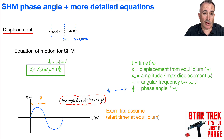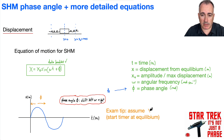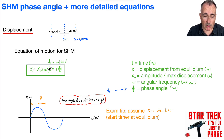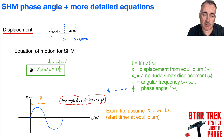We're taking the whole graph and moving it. We're going to assume that when t equals zero, x equals zero — so x equals zero when t equals zero. If you put t equals zero into the equation, sine of zero is zero, and zero times anything is still zero, so x is zero.